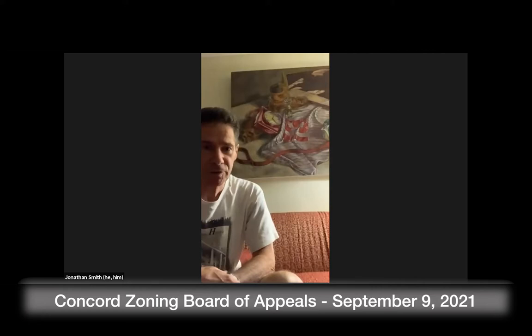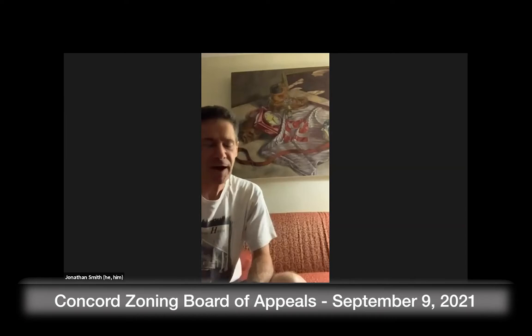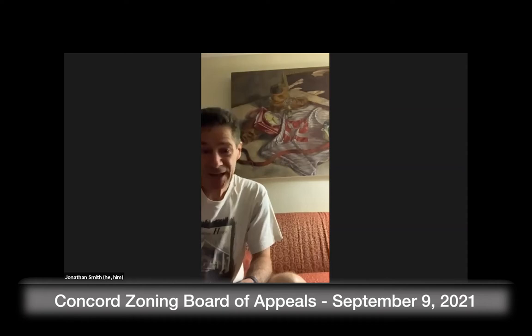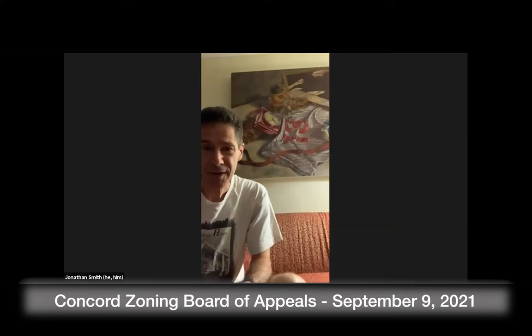Jonathan Smith, Upland Road, Concord. I have two questions. First, can you clarify what is included in the calculation of the GFA? Second, the GFA calculation worksheet does not provide the necessary calculations — it is blank and does not even have the signature of the building inspector. Can the board consider this application without it?